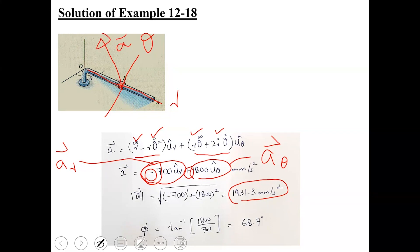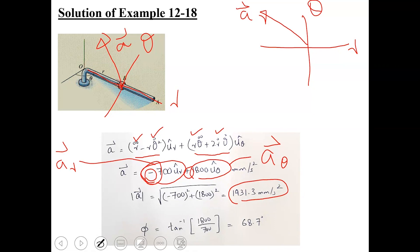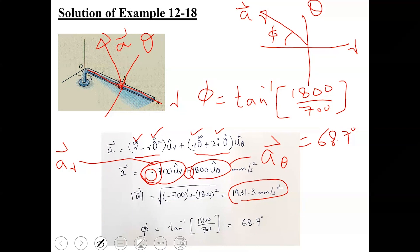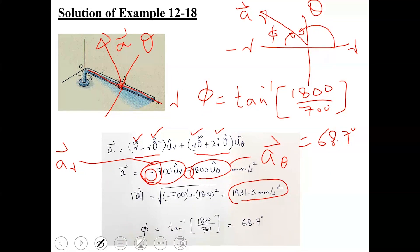In 2D with r and theta axes, the acceleration vector lies in the second coordinate since its radial part is negative and transverse part is positive. To find the angle phi which this vector makes with the negative r-axis, we take tan inverse of the transverse component 1800 divided by the radial magnitude 700, giving phi equal to 68.7 degrees. This angle is measured from the negative r-axis in the clockwise direction, so subtracting from 180 degrees gives the angle with respect to the positive r-axis.